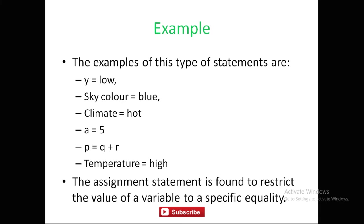Further examples of assignment statements: a = 5, p = q + r, temperature = high. The assignment statement restricts the value of a variable to a specified equality — for example, if a = 5, then a should be exactly 5 and not equal to any other number. So in assignment statements, we restrict the value to the specified constant value. This is the first method of rule formulation, where we simply assign one value to another value or to a linguistic term.